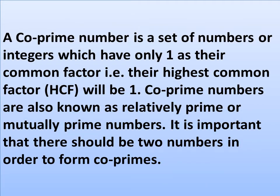Before we move on to the next problem, we have to know about co-prime numbers. A co-prime number is a set of numbers or integers which have only one as their common factor — that is, their highest common factor (HCF) will be one. Co-prime numbers are also known as relatively prime or mutually prime numbers. It is important that there should be two numbers in order to form co-primes.